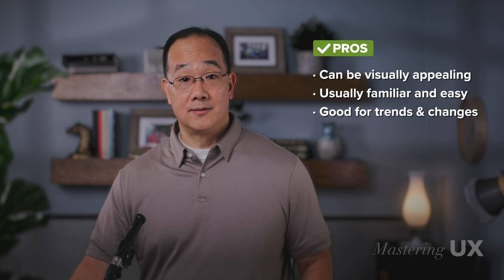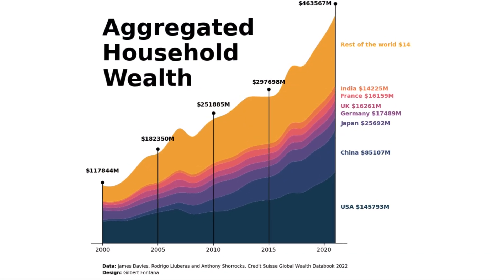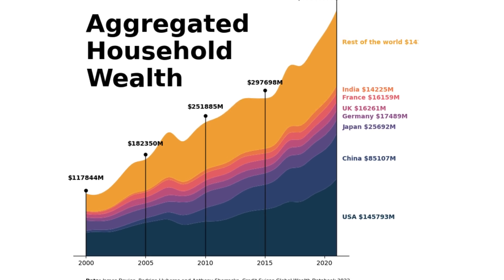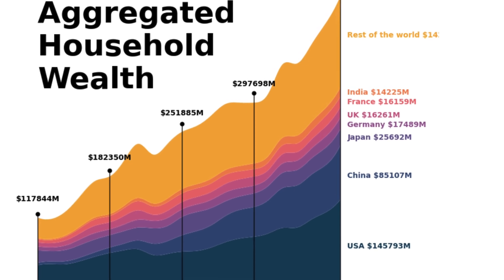The pros of bar charts and line graphs are that they're visually appealing, familiar, and easy to understand. They can show trends and changes over time and compare data between different groups. One of the cons is that they can be misleading if not used correctly. As a tip, instead of having legends, try to add labels inline if possible. Don't be afraid to call out what's important — add indicators, important thresholds, or key metrics to the graph. It's all about storytelling and emphasizing what the user wants to see.